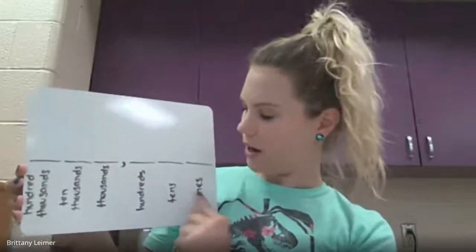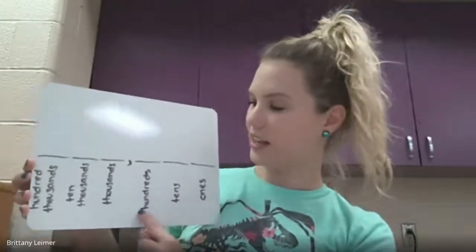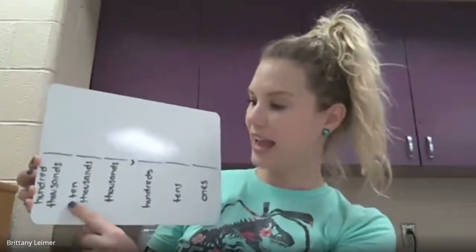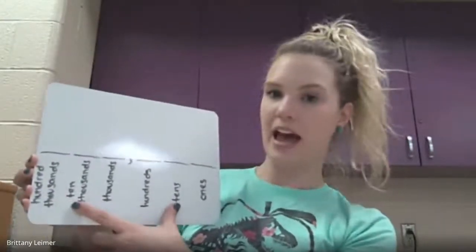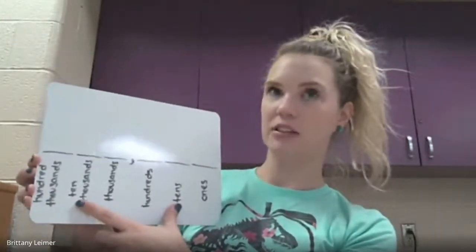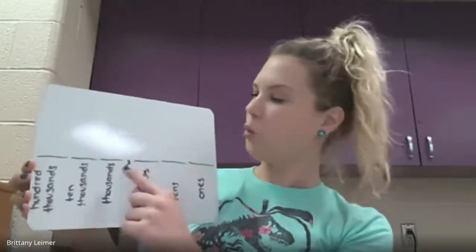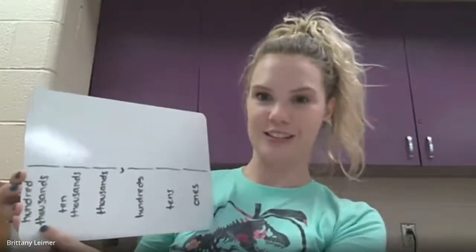Kind of like how we went ones, tens, hundreds — thousands is kind of like another ones. Then we have our tens, but we add the last name thousands, and our hundreds, but we add thousands. Once you pass that comma, these three places have the last name of thousands. They're kind of like their own little family: the thousands, the ten-thousands, and the hundred-thousands.